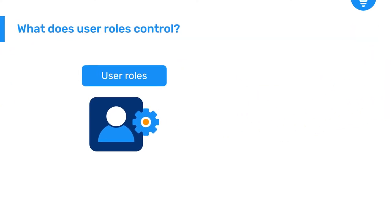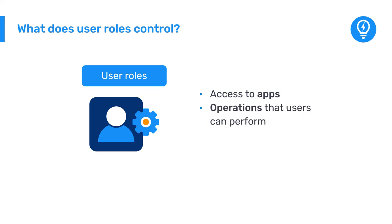The first layer, user roles, controls access to various apps within DHIS2, along with the types of operations that a specific class of users can perform within these apps. User roles also control specific administrative functions within DHIS2. To learn more about user roles, consult the DHIS2 documentation.